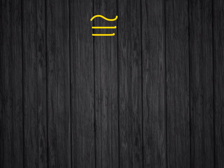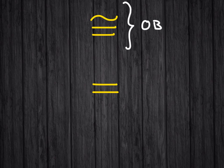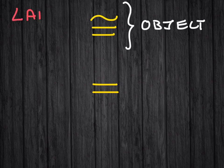I want to talk about two very important symbols. The first is congruence and the second is equals. The congruence symbol is used when referring to objects, the physical item itself. For instance, that might be angle ABC or segment DE. These are objects.